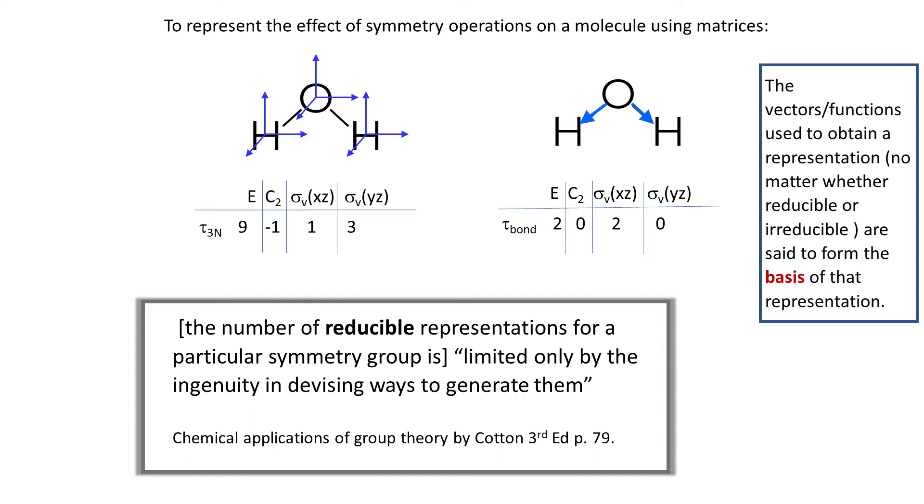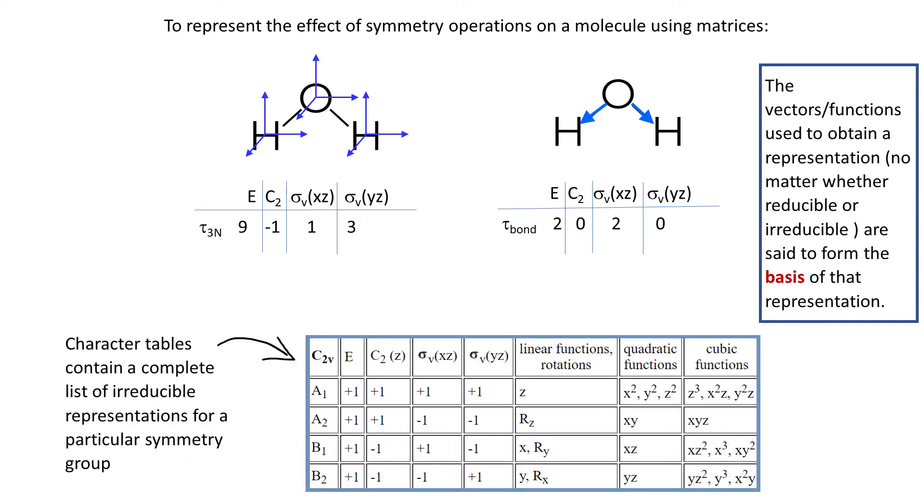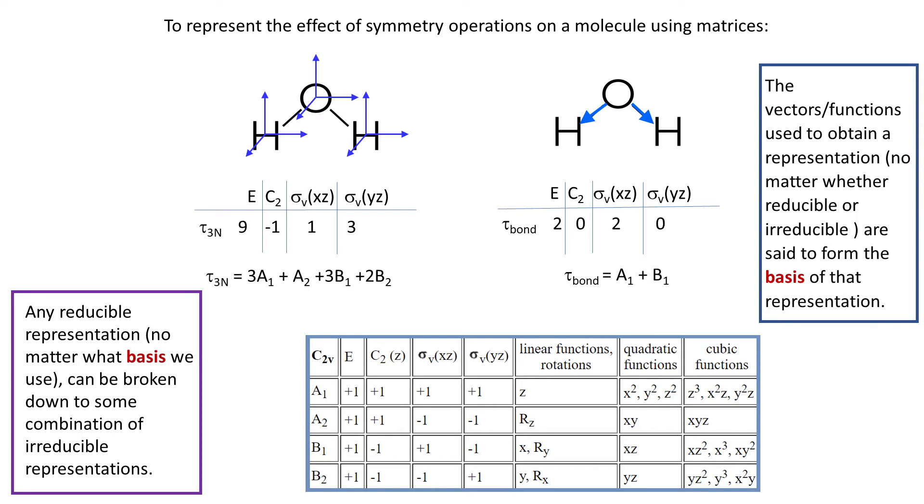However, each symmetry group has a finite list of so-called irreducible representations and every reducible representation can be broken down into some irreducible representations. For instance, we can see that 2020 reduces to a1 plus b1.